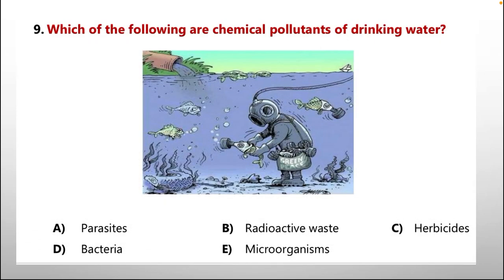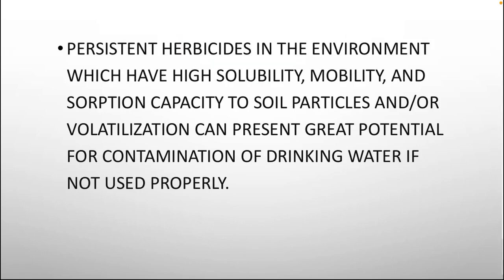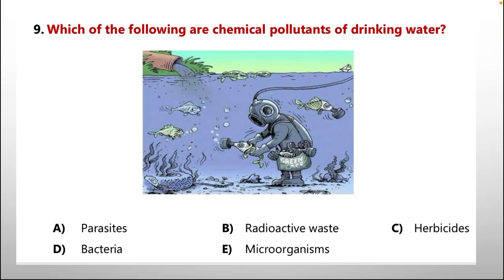Question 9: Which of the following are chemical pollutants of drinking water? Options — A: parasites, B: radioactive waste, C: herbicides, D: bacteria, E: microorganisms. According to the explanation provided, the correct option is C: herbicides, as they are chemical pollutants of drinking water.